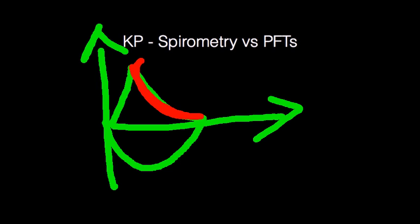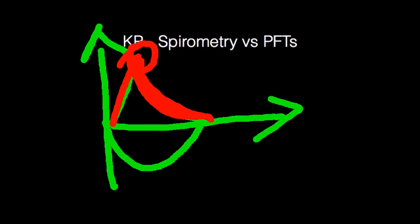So if you don't find the FEV1/FVC ratio falling within the expected less-than-0.7 range, or not lower than the lower limit of normal, you may want to look at the concavity of the curve as well. You can also assess whether the flow volume loops are consistent — whether they have a high peak and a straight line coming down with no hesitation, which could otherwise impair the clinical utility of the findings.